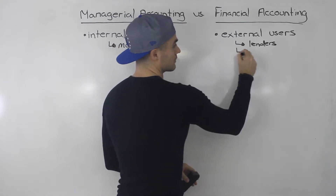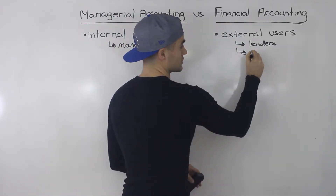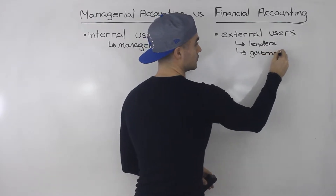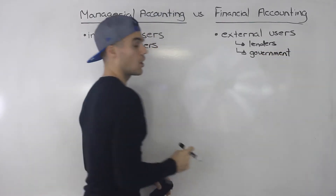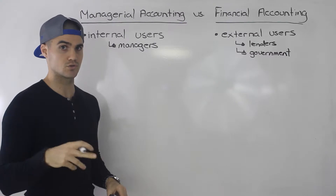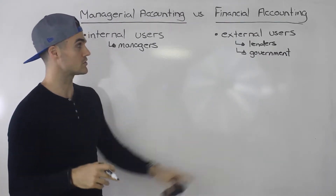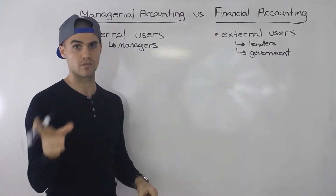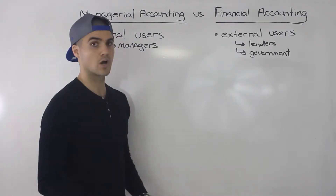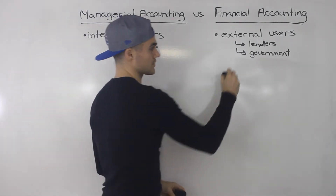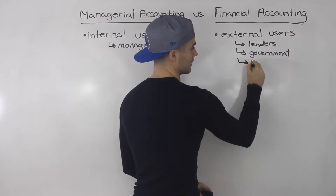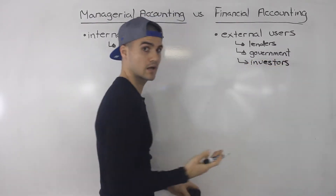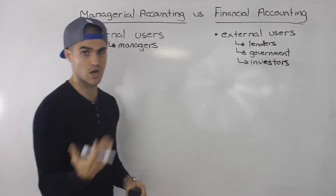Another common type of external user is the government or any regulating body. All public companies have to issue reports — 10K reports — and all of the financial accounting statements are within those reports. Another common type of external user for financial accounting is investors, so anyone who's thinking of buying the company or buying the stock of the company.